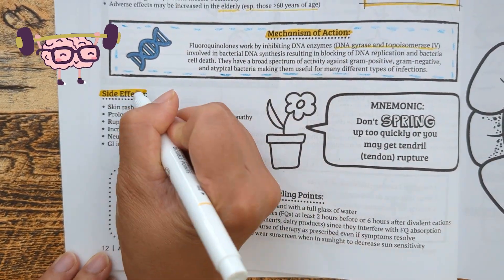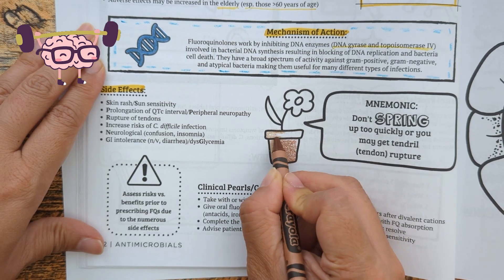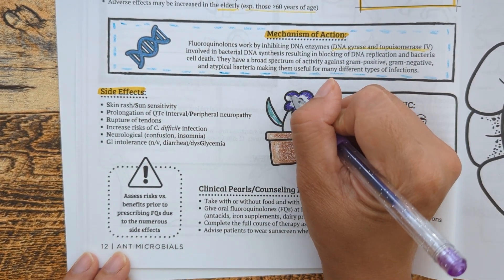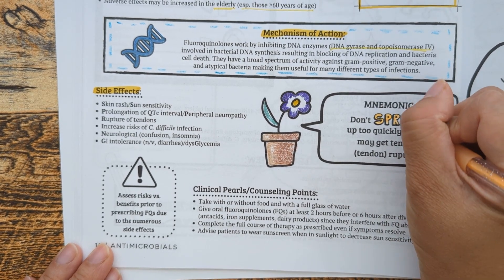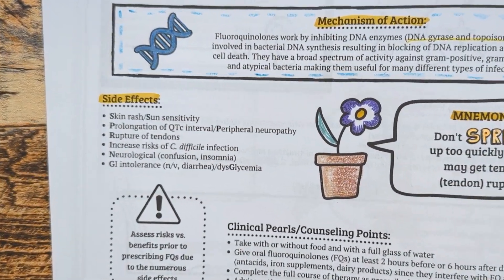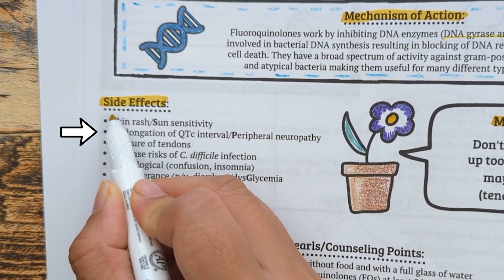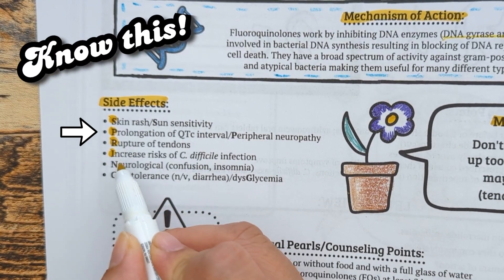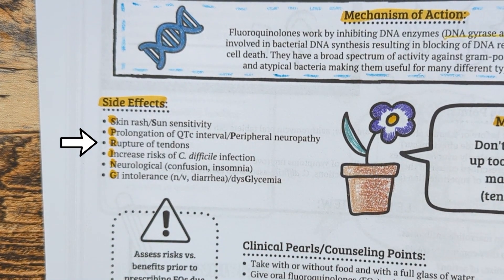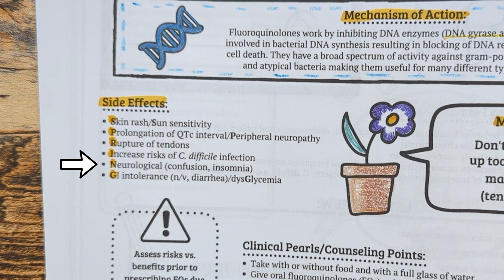For side effects, think of the mnemonic: Don't SPRING up too fast or you get tendril rupture. S is for skin rash and sun sensitivity. P is for prolongation of QTc interval and peripheral neuropathy — definitely know this. R is for rupture of tendons; fluoroquinolone labels already have a box warning for tendonitis, tendon rupture, and worsening of myasthenia gravis. I is for increased risk of C. difficile infection like most antibiotics. N is for neurological effects — this medication can cause confusion and insomnia, especially in elderly patients. G is for GI intolerance including nausea, vomiting, diarrhea, and dysglycemia, meaning hypo- or hyperglycemia.